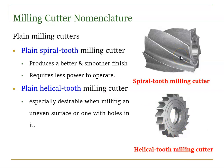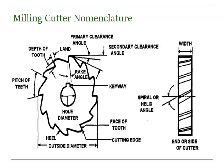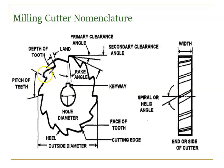Now we go to discuss the milling cutter nomenclature. The first term is outer diameter, also called outside diameter or maximum diameter. Next is pitch. Pitch means the angular distance — if you take a point on one tooth and move radially, the distance until you reach the corresponding point on the next tooth is the pitch.